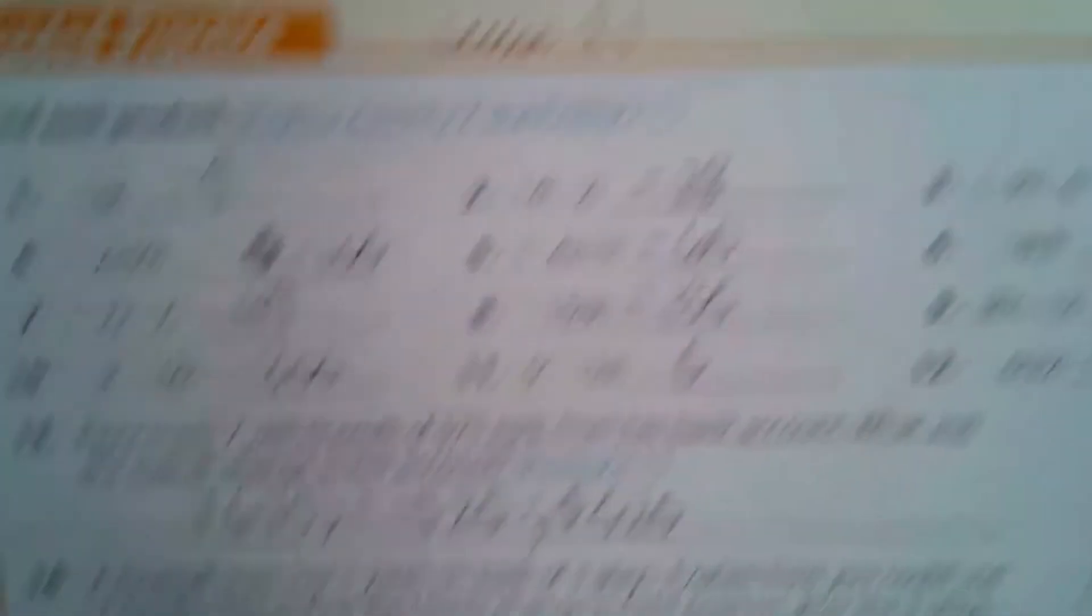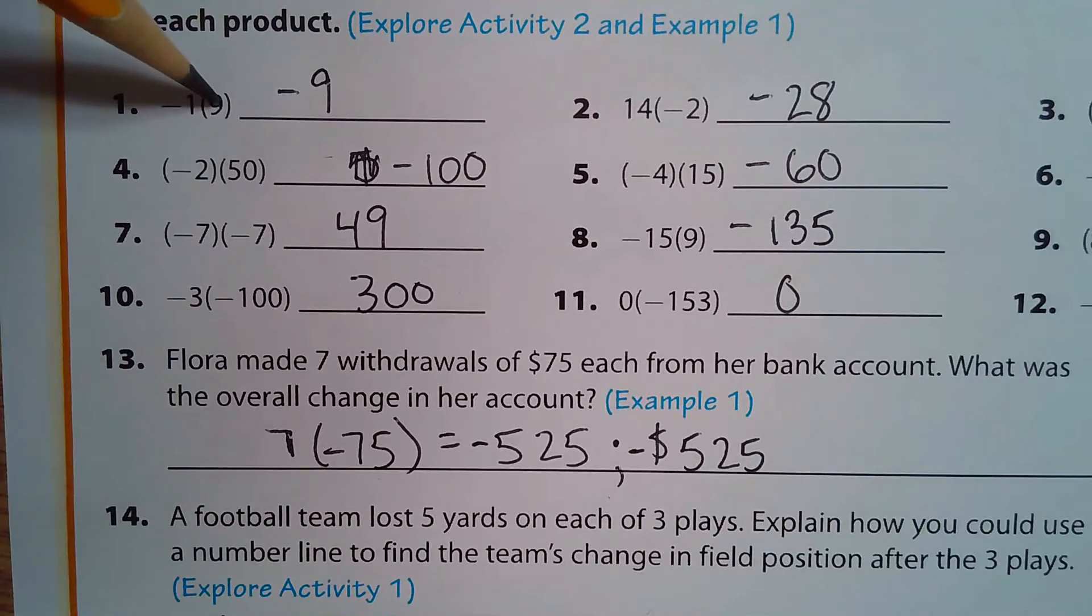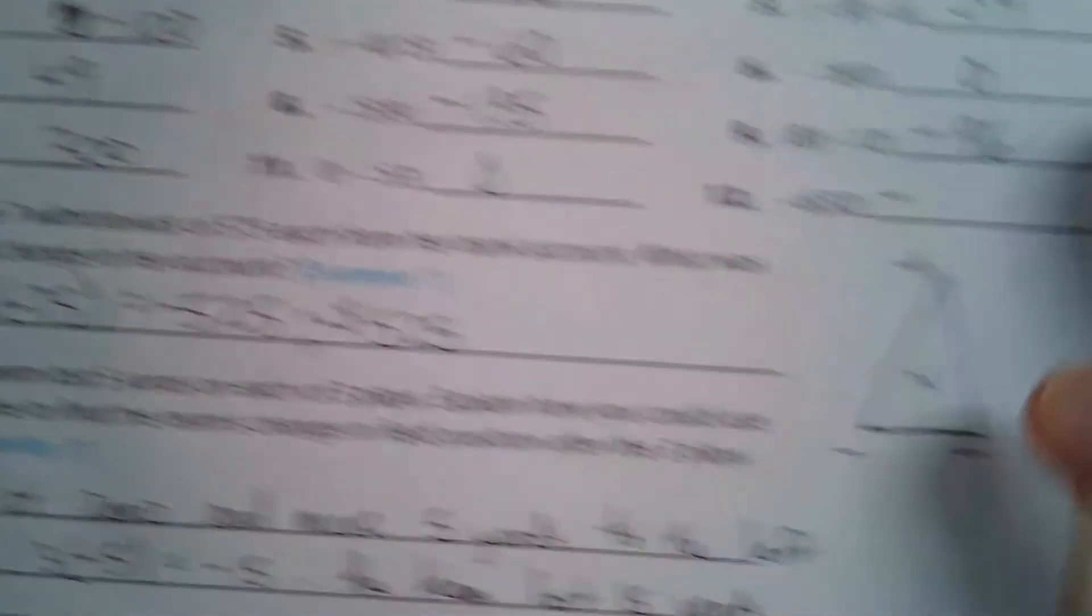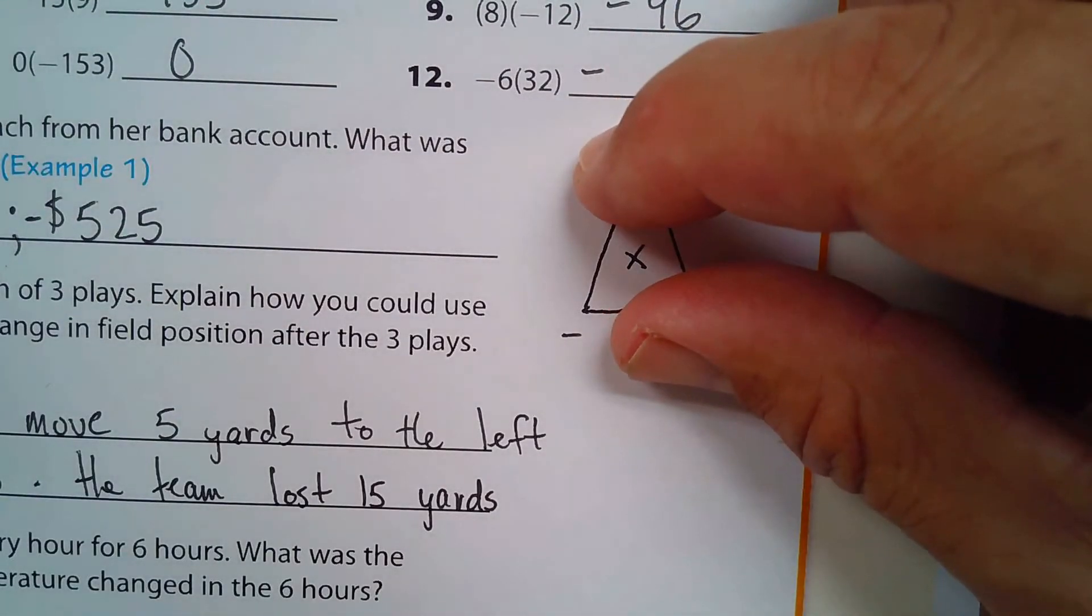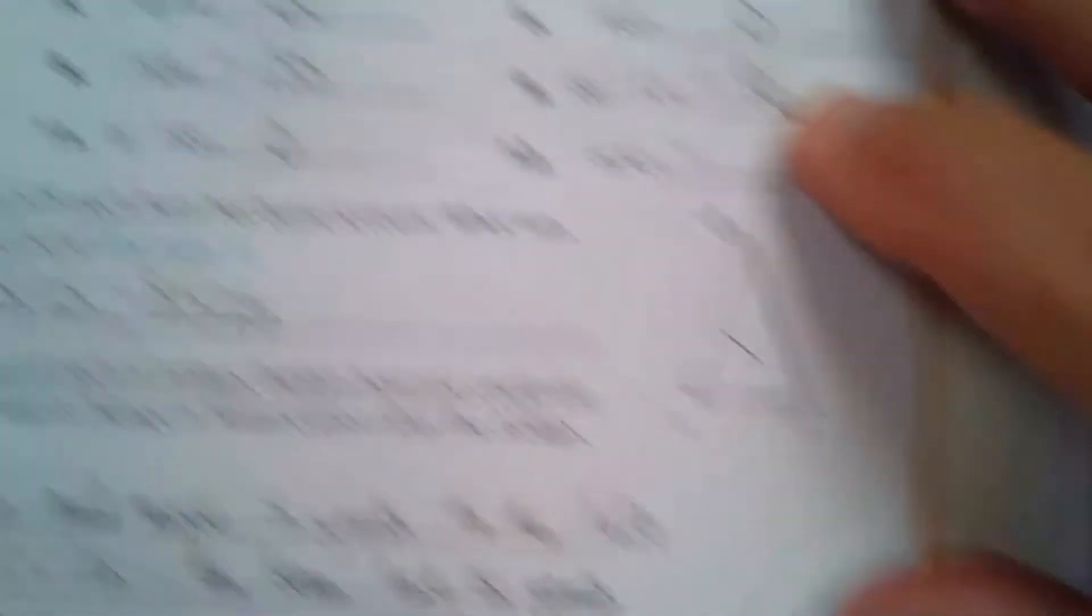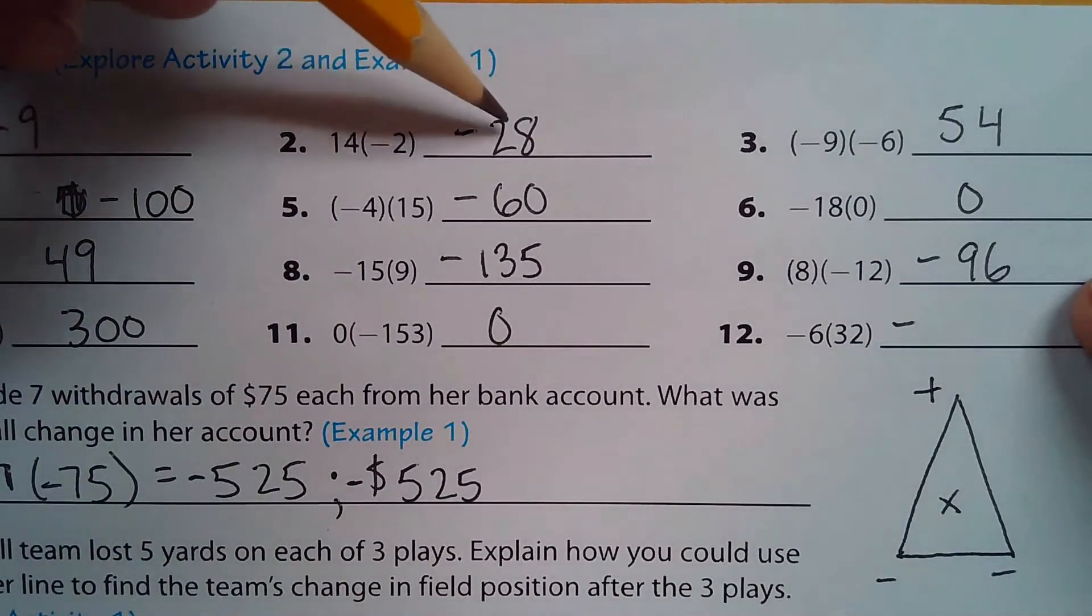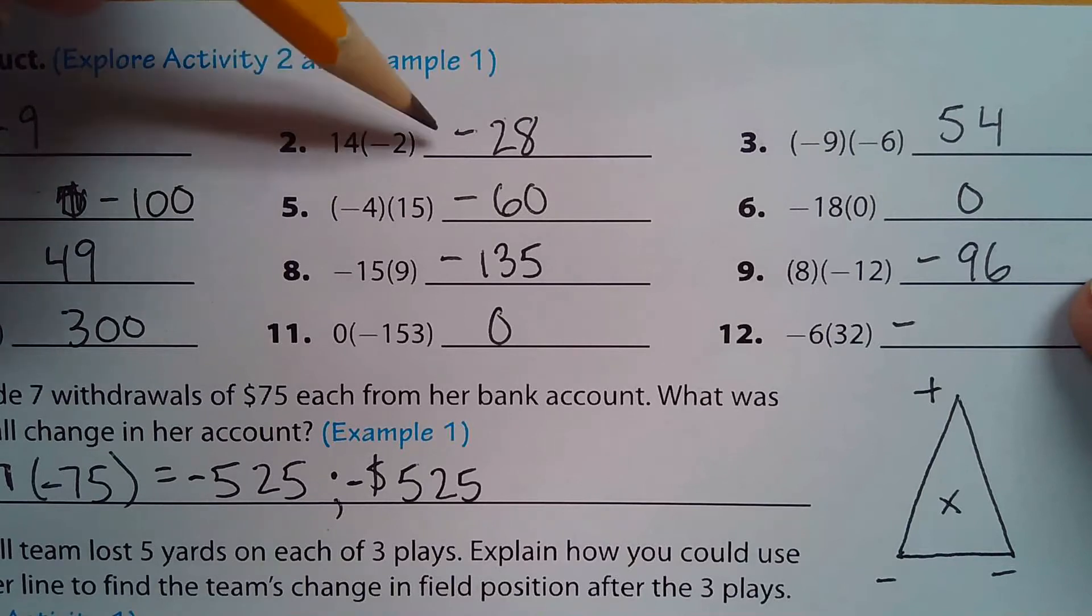So this is all multiplication. 1 times 9 is 9, and a negative times positive is a negative, and that would be shown here. A negative times a positive is a negative. That's shown there again. This is in the lesson that is in the prior video. And so we just rifle through these: 14 times 2 is 28, and one of them is negative, so the answer is negative.